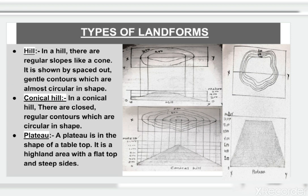First is hill. A hill has regular slopes like a cone and is shown by spaced-out gentle contours which are almost circular in shape. Next is conical hill, which has close regular contours that are circular in shape. A plateau is in the shape of a table top — it is a highland area with a flat top and steep sides.